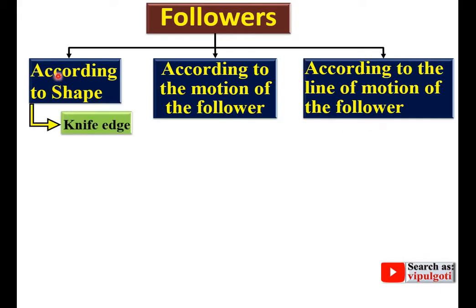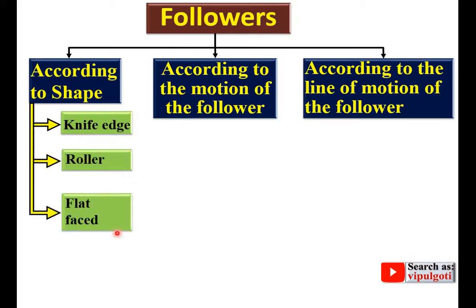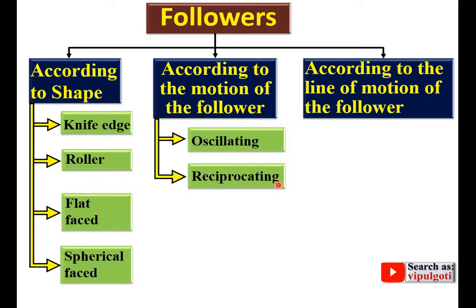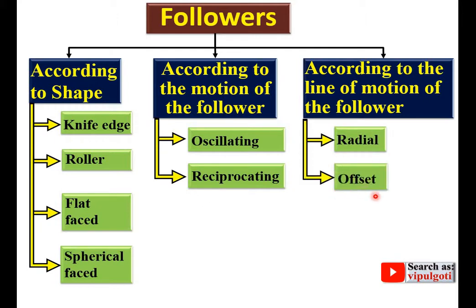According to shape, you can classify the Follower as knife edge Follower, roller Follower, flat face Follower, and spherical face Follower. According to the motion of the Follower, you can classify it as oscillating Follower or reciprocating Follower. According to the line of motion of the Follower, you can classify it as radial Follower or offset Follower.